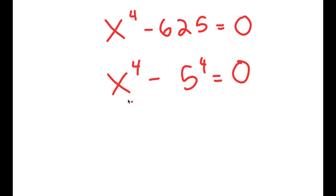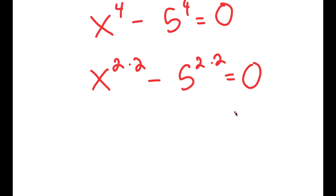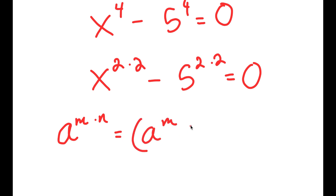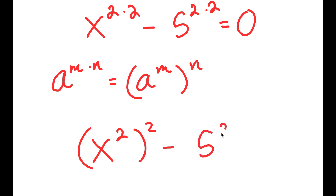From here, I'm going to rewrite x to the power of 4 as x to the power of 2 times 2, and 5 to the power of 4 as 5 to the power of 2 times 2. The reason I'm doing this is because I can use the exponential property a to the power of m times n is equal to a to the power of m to the power of n. So x to the power of 2 times 2 equals x squared to the power of 2, and 5 to the power of 2 times 2 equals 5 squared to the power of 2.